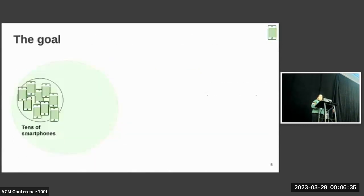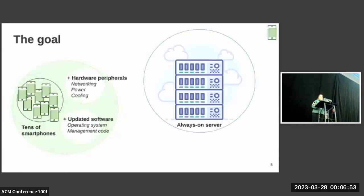Nevertheless, our goal is to go from small clusters of smartphones, maybe on the order of 10 since we said 50 phones as a server, combined with some added hardware peripherals to provide networking, power, and cooling, as well as an updated software stack to deal with those OS-related issues and manage a larger number of devices. With these three components, we hope to get something that looks like an always-on server made from smartphones.